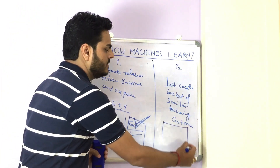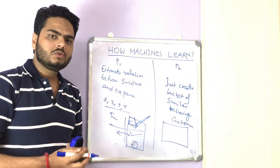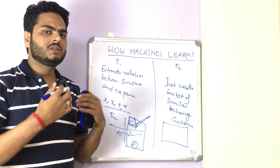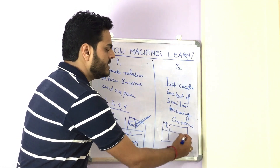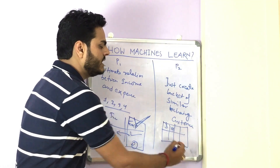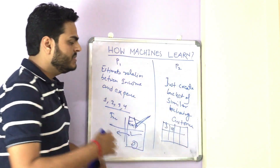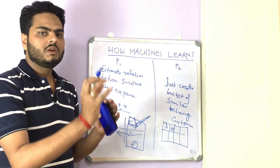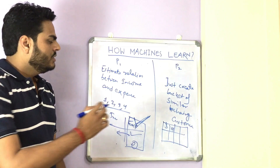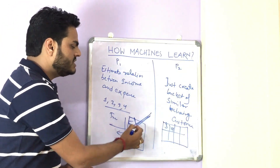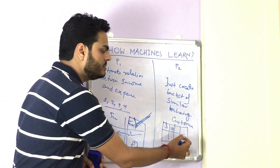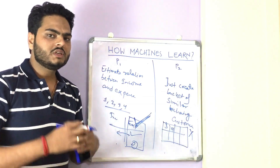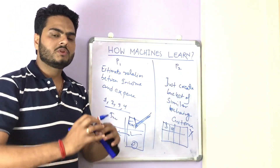Whereas in case two, there is nothing to predict. What we have to do is group similar behaving customers — by looking at their purchase frequency, their dollar volume in a month, how many times they miss a payment, how many times they complain, and things like that. In this case, we just want to figure out a pattern hidden in the data — categories, groups, or buckets hidden in the data.